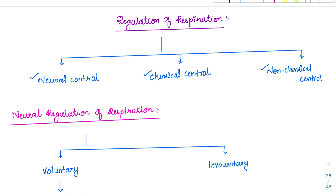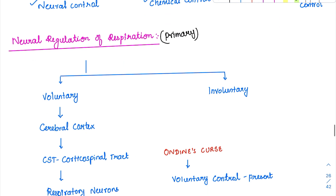Coming to the neural regulation of respiration, which is the primary form. Because respiration is voluntary or involuntary — most of the times it is involuntary. But can we control it voluntarily? Yes. If I ask you to breath-hold, you can hold it but for a little time. If I ask you to hyperventilate, you can do it but for a little time. Most of the times it is involuntary.